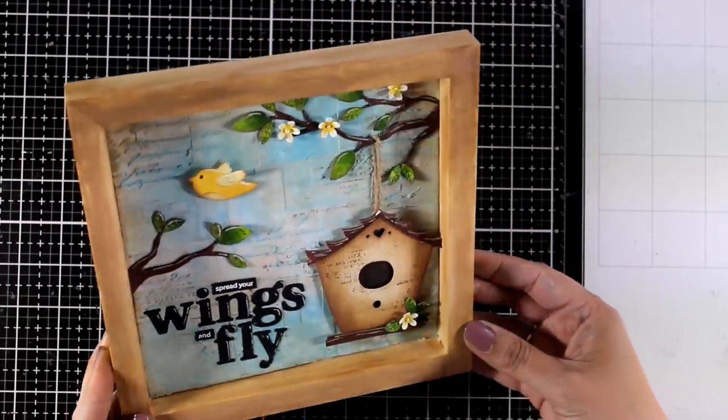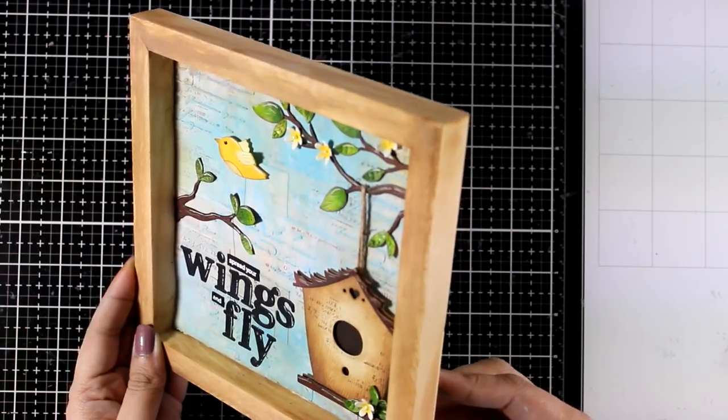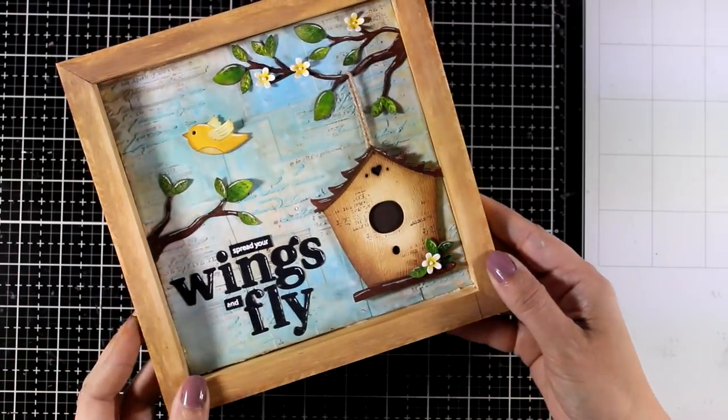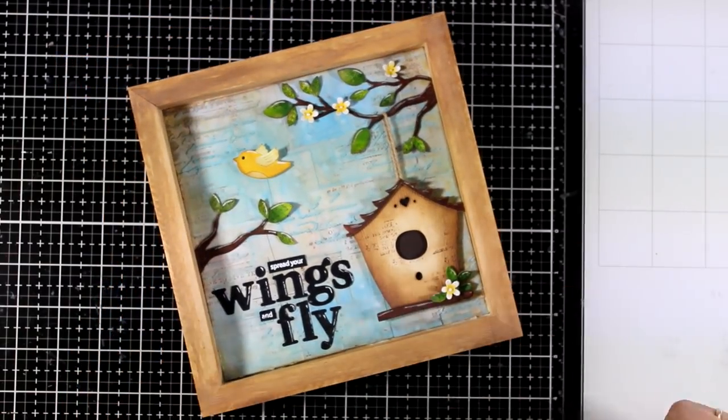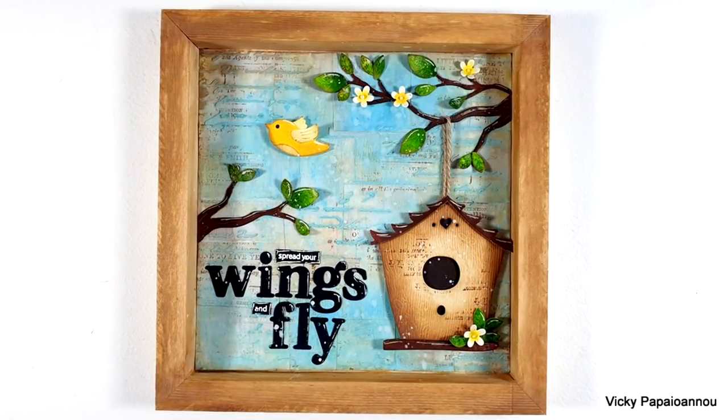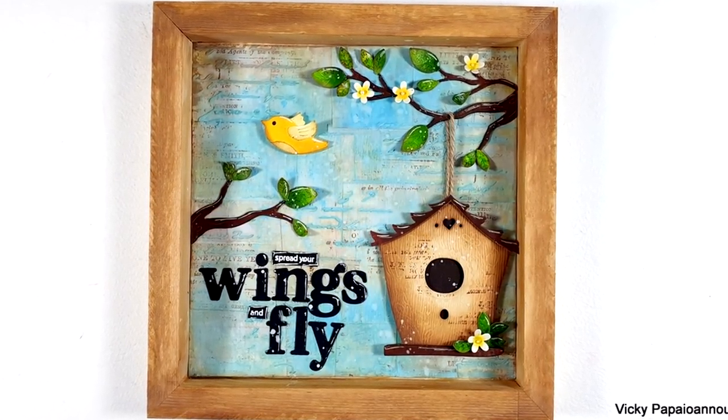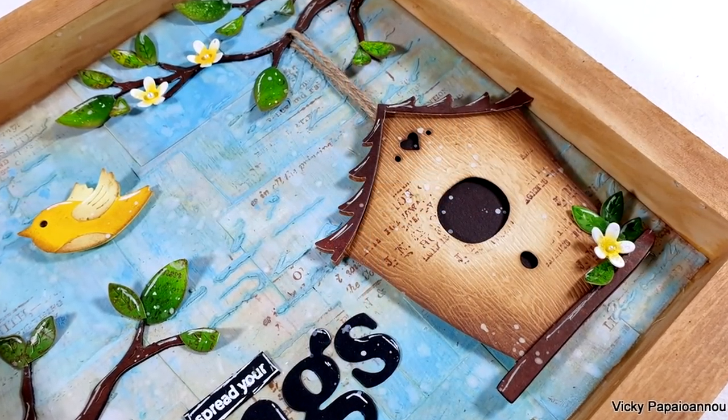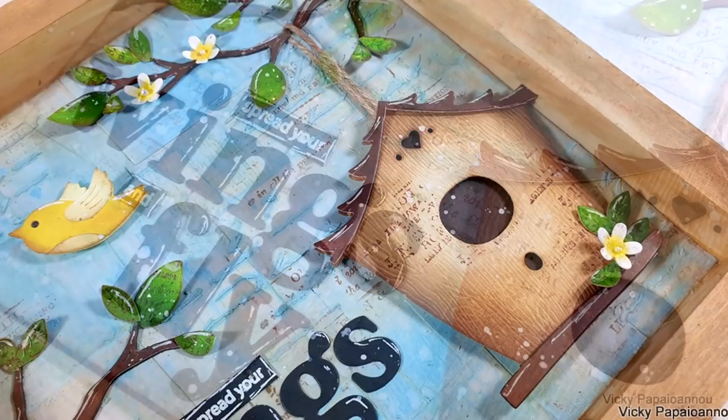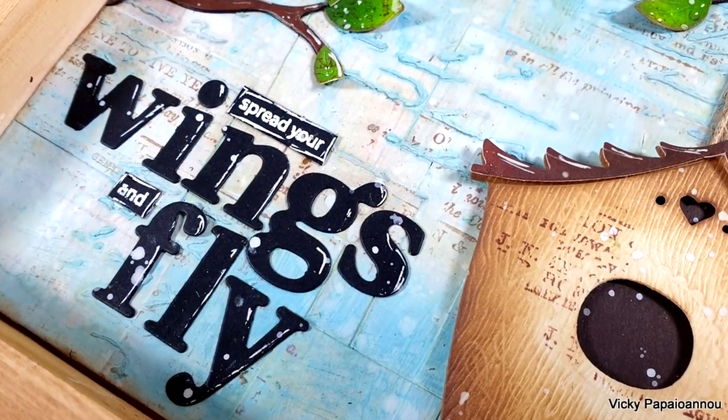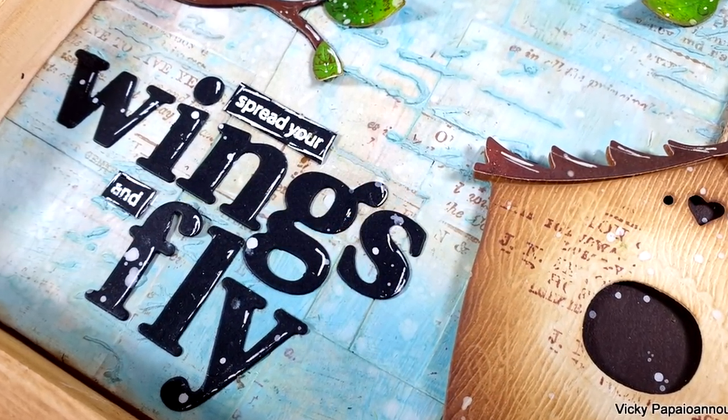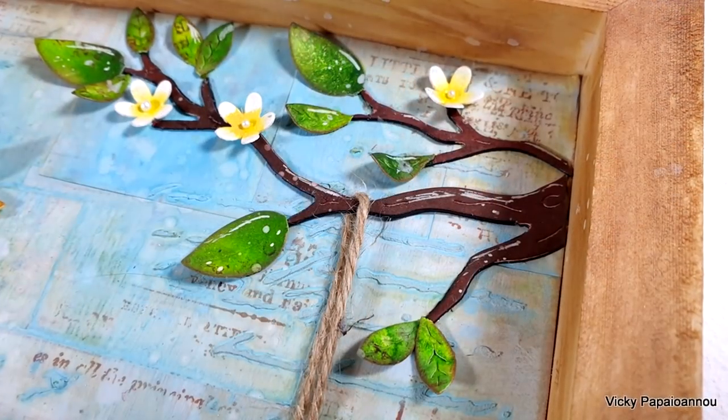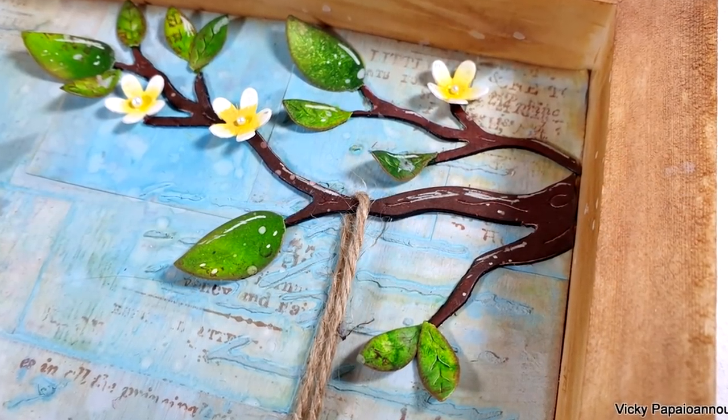So that was the mixed media shadow box for today. I hope that you had fun, that you got inspired. Down below you will find a list of all the products that I used to create my project. I am planning to share even more ideas using my new collection with Spellbinders. Here are some close-up photos on the project that I made for today. Don't forget to leave me a comment, to subscribe if you haven't done so already, and also to like the video. It really helps. Thank you all for watching and I'll see you all next time.